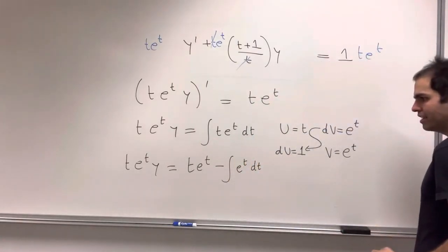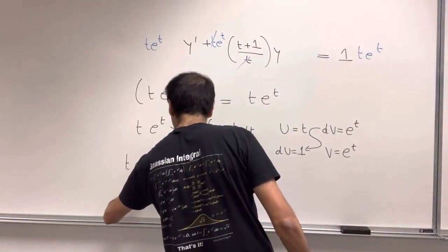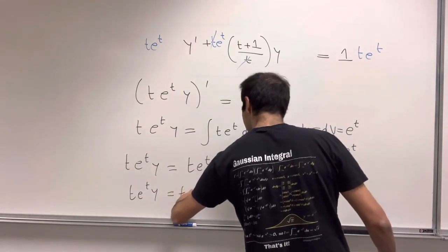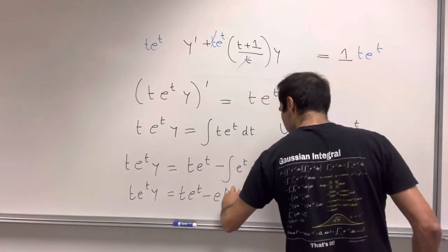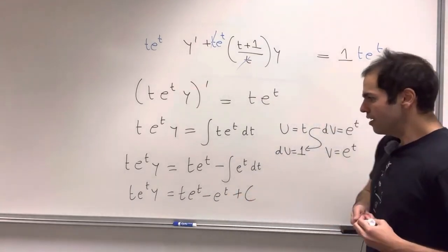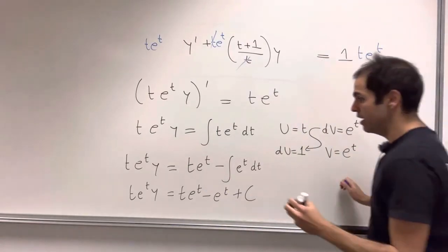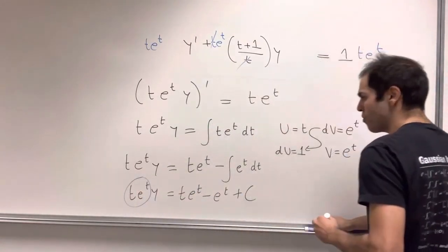So e^t, e^t, which then becomes, again, t*e^t*y equals t*e^t minus e^t plus some constant. But then what you can do, you can simply divide by t*e^t and then you get the following formula for y.